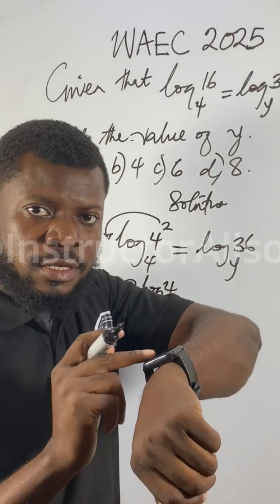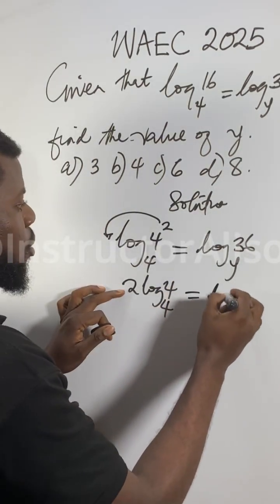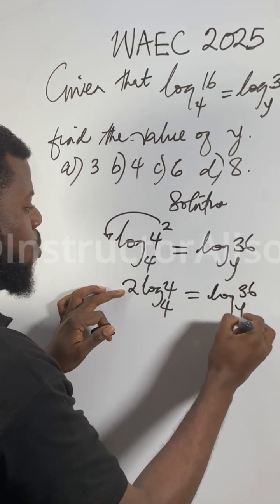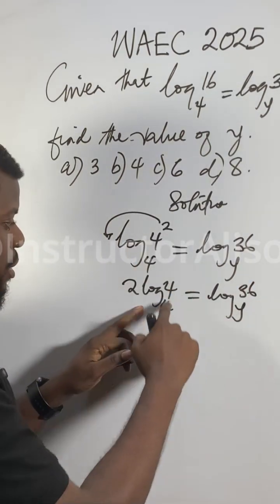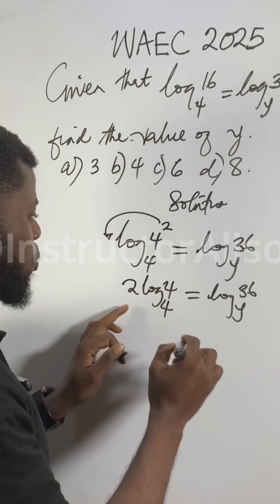Check, you don't reach one minute. If you like, the value it shall be, maybe we'll run it quickly. Log 36 base Y. You know, log 4 base 4 is 1. So 2 times 1 is 2.